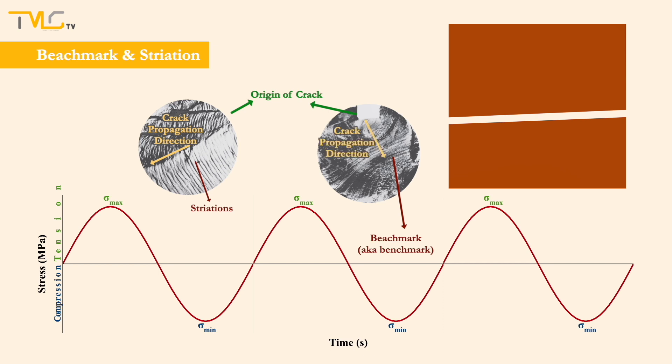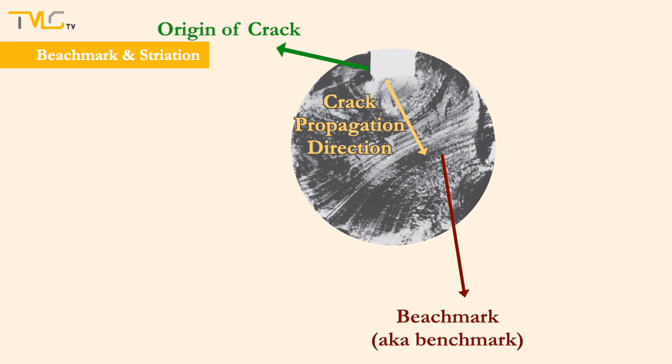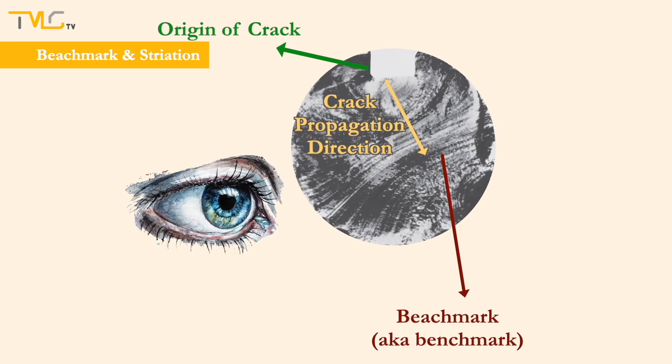Beachmark patterns are macroscopic markings, and they can be seen by naked eye without the aid of any optical equipment. Each beachmark pattern indicates a period of time over which crack growth occurred.